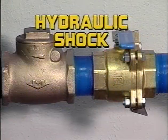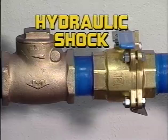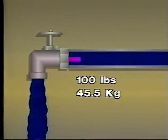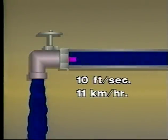Hydraulic shock occurs when a valve is closed too abruptly. When a water valve is open, a solid column of water moves from its source at the main to the valve outlet. This could be 100 pounds of water flowing at 10 feet per second or about 7 miles per hour.